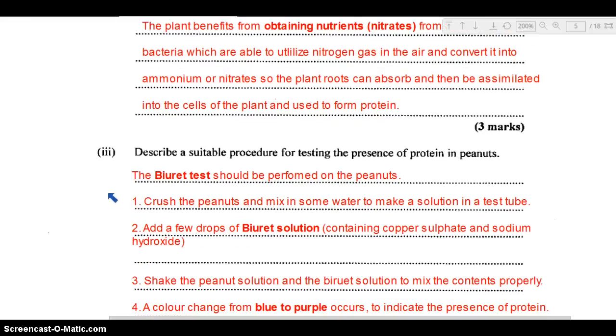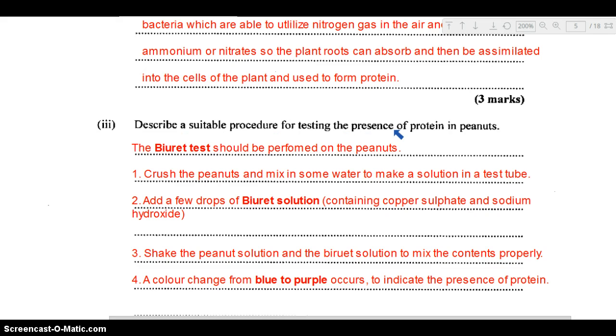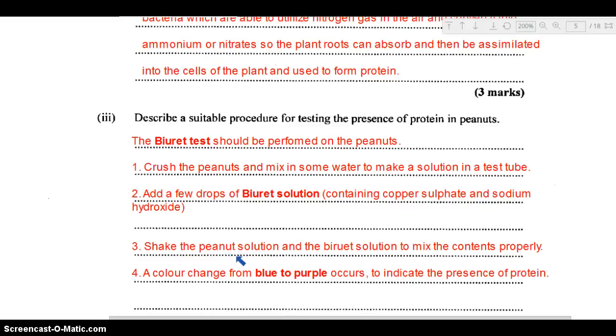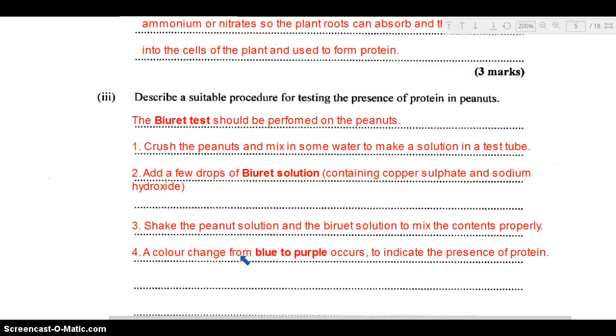Part three: describe a suitable procedure for testing the presence of protein in peanuts. We're going to look at the protein test, which is the Biuret test. That will be performed on the peanuts. First of all, you will need to crush the peanuts and mix in some water to form a solution in a test tube. Then you're going to add a few drops of the Biuret solution. The Biuret solution contains copper sulfate and sodium hydroxide and is usually a blue solution. You shake that up with the peanut solution, mix all the contents properly. You should notice a color change from blue to purple because peanuts would have protein, and that is the color change expected when protein is present.